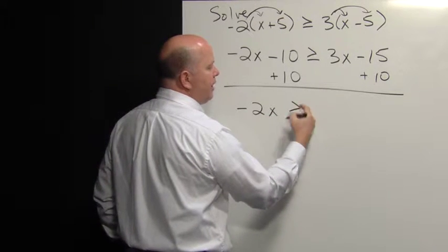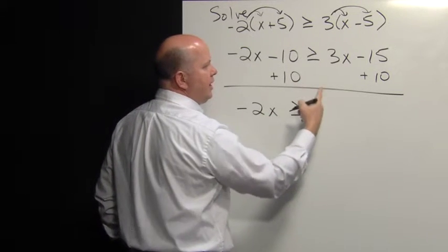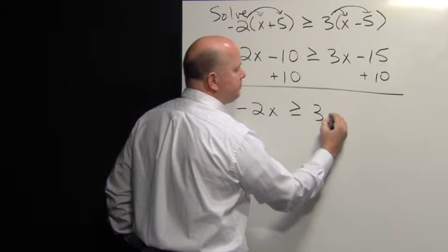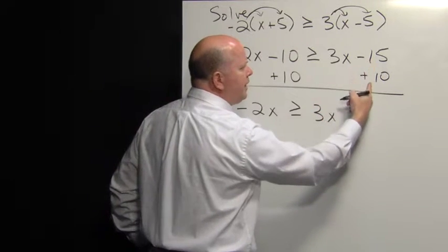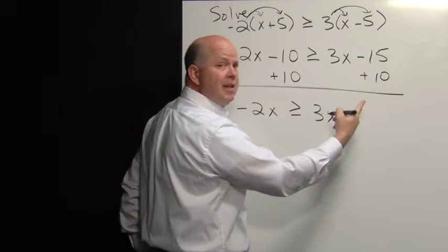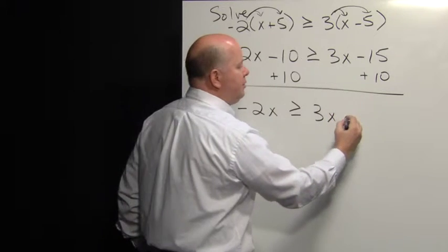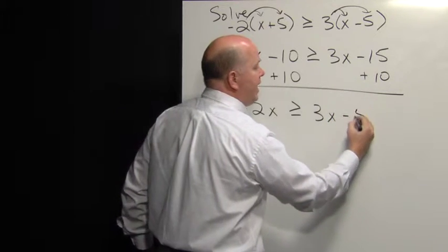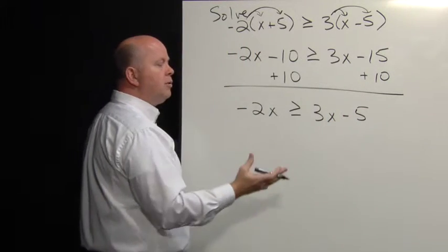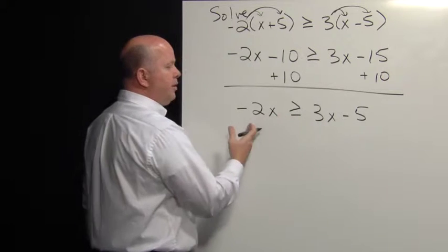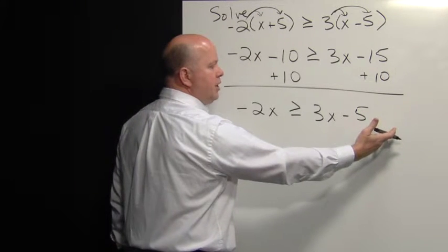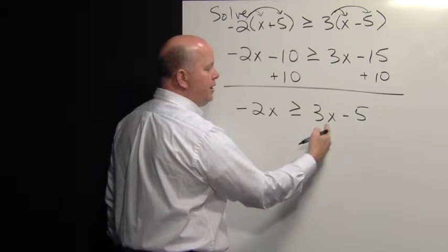We still have our greater than or equal sign. We still have our three X. Negative 15 plus 10 would be negative five. We've almost achieved our goal of getting all of our variables on the left and all of the constants on the right.